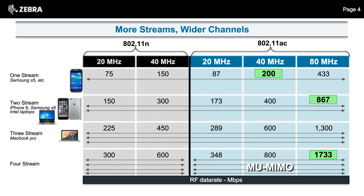There are many good charts on the internet, but we've tried to simplify things here. Once you start talking about 11AC, there are many different combinations — it's definitely not as simple as 11G. The three highlighted figures — 200 Mbps, 867 Mbps, and 1,733 Mbps — represent very common numbers you'll see as you deploy this technology. 200 Mbps is what you get from a first-generation 11AC product, like an early iPhone 6 with one stream, Samsung S5, or HTC — one-stream devices with 40 MHz channel width.